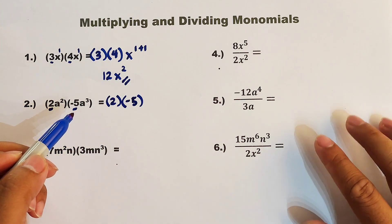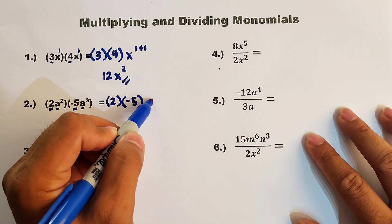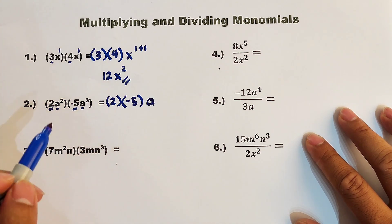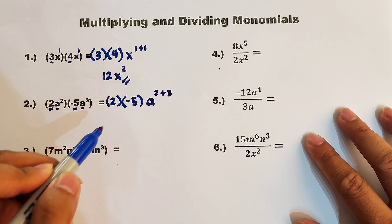Now let's proceed with the variables. For the variable, we will copy the same variable, which is a. And then look at the exponents, we have 2 and 3, 2 plus 3.